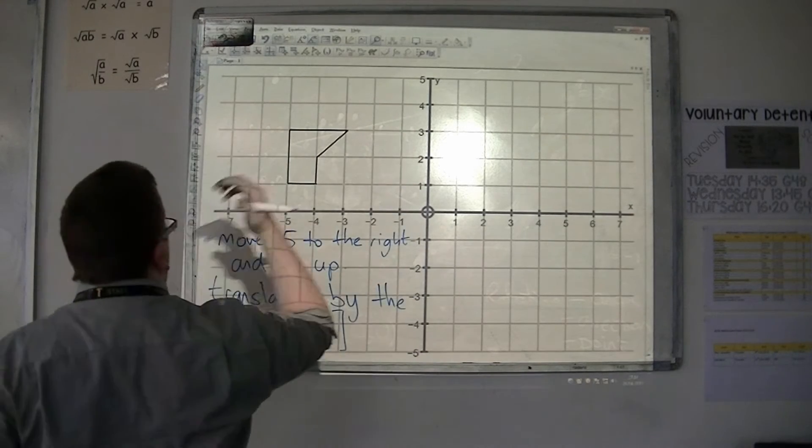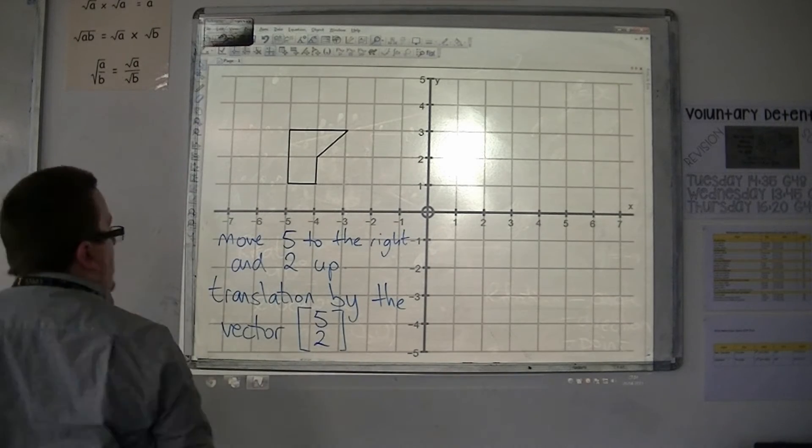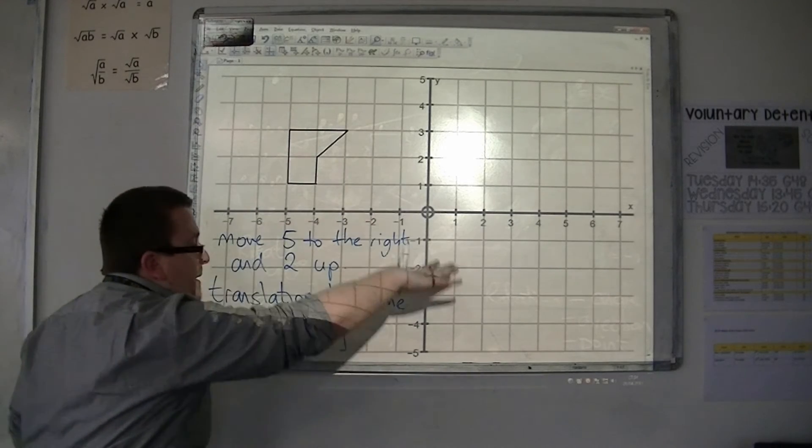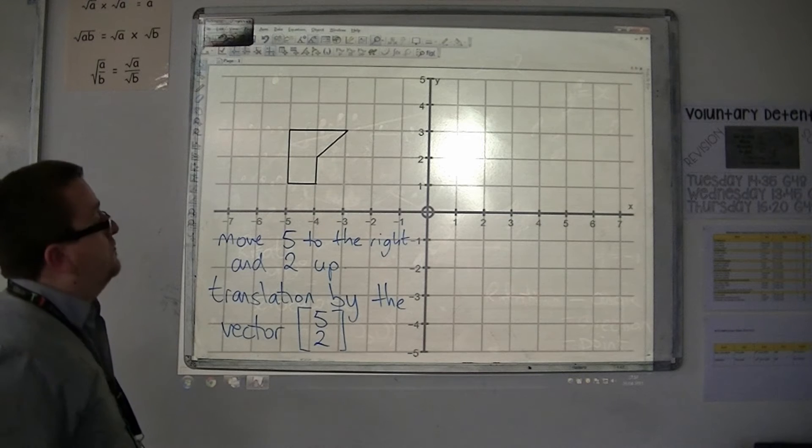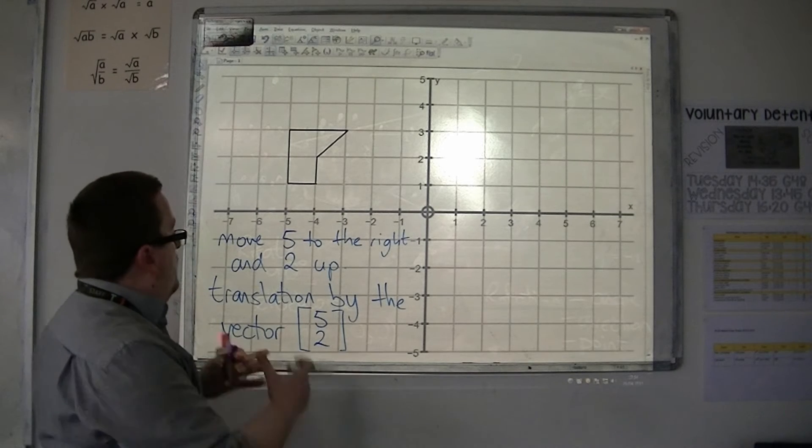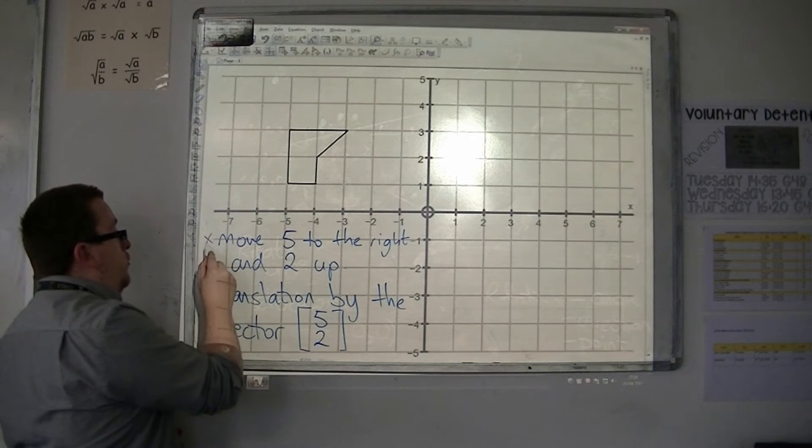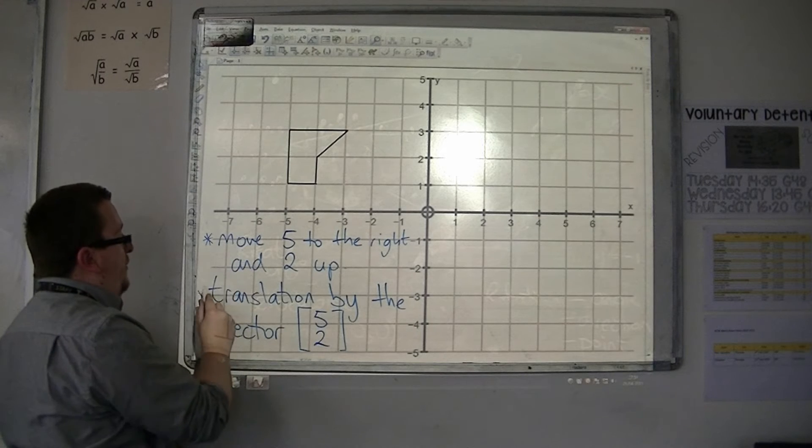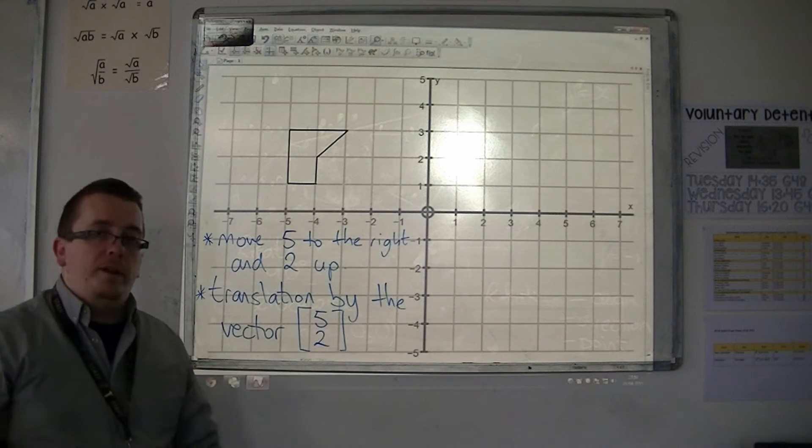If we were going to the left, then it would be negative five. And if we were going two down, it would be negative two. So this is one way of putting it, and this is the more maths-y way of putting it.